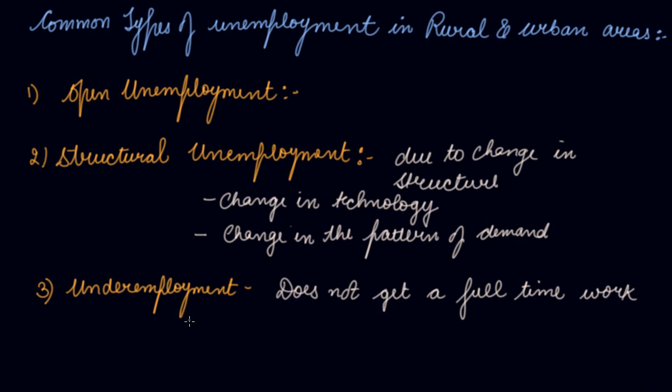There are two types of underemployment. Number one is visible underemployment, in which an educated person should work for at least eight to nine hours a day, but he is employed only for four hours a day.